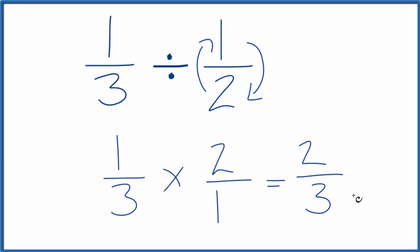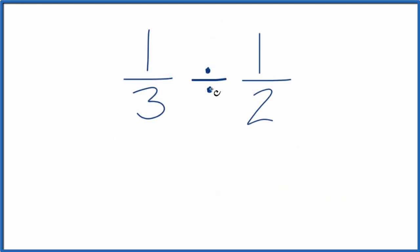There's one other way we can do this. You could multiply one times two, that gives you two. And three times one, that gives you three. And again, you get two-thirds. It's really the same thing as multiplying by the reciprocal, just a little different method here.